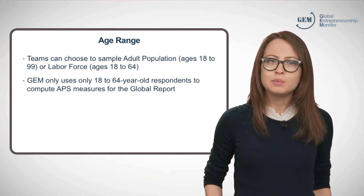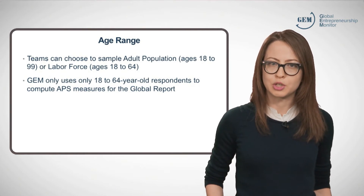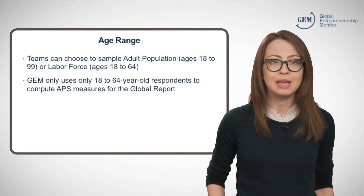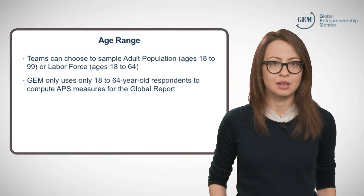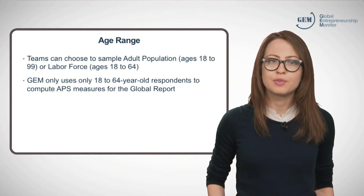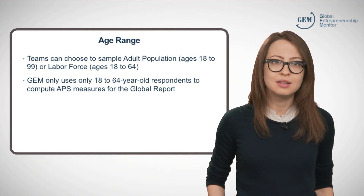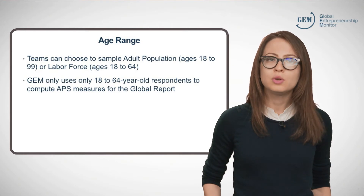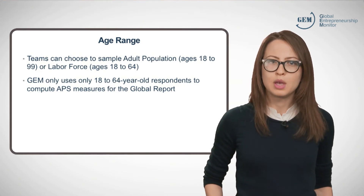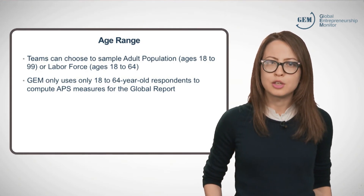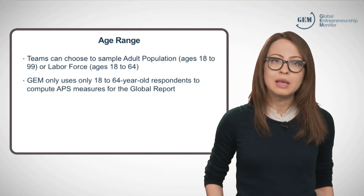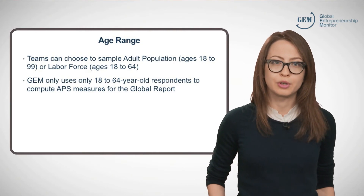Another consideration is the age range. Teams can choose to sample the adult population, capturing respondents between 18 and 99, or the labor force, for those between 18 and 64. You can choose whatever is right for your team, but keep in mind that GEM only uses data from 18 to 64-year-olds to compute our APS indices.